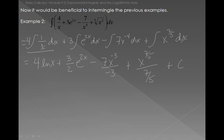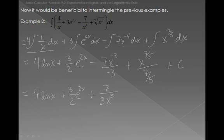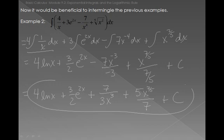Cleaning up the result: 4 times the natural log of x, plus 3/2 e to the 2x. For the third term, the two negatives combine and we move x to the denominator, giving plus 7 over 3x cubed. For the last term, flipping 7/5 gives plus 5x to the 7/5 over 7, plus c. That completes the integration.